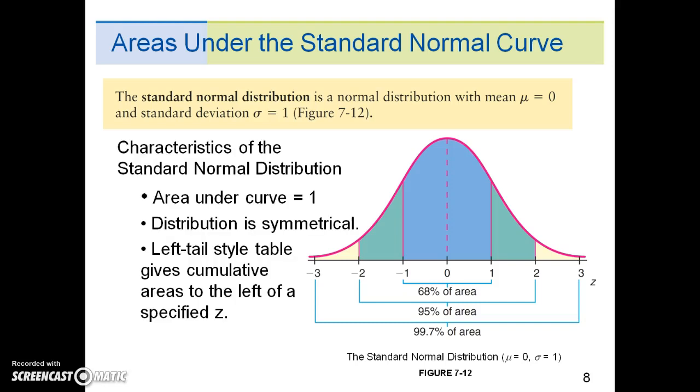The characteristics of the standard normal distribution include: first, the area under the curve equals one; second, the distribution is symmetrical; and third, the left tail-style tables give cumulative areas to the left of a specified z.